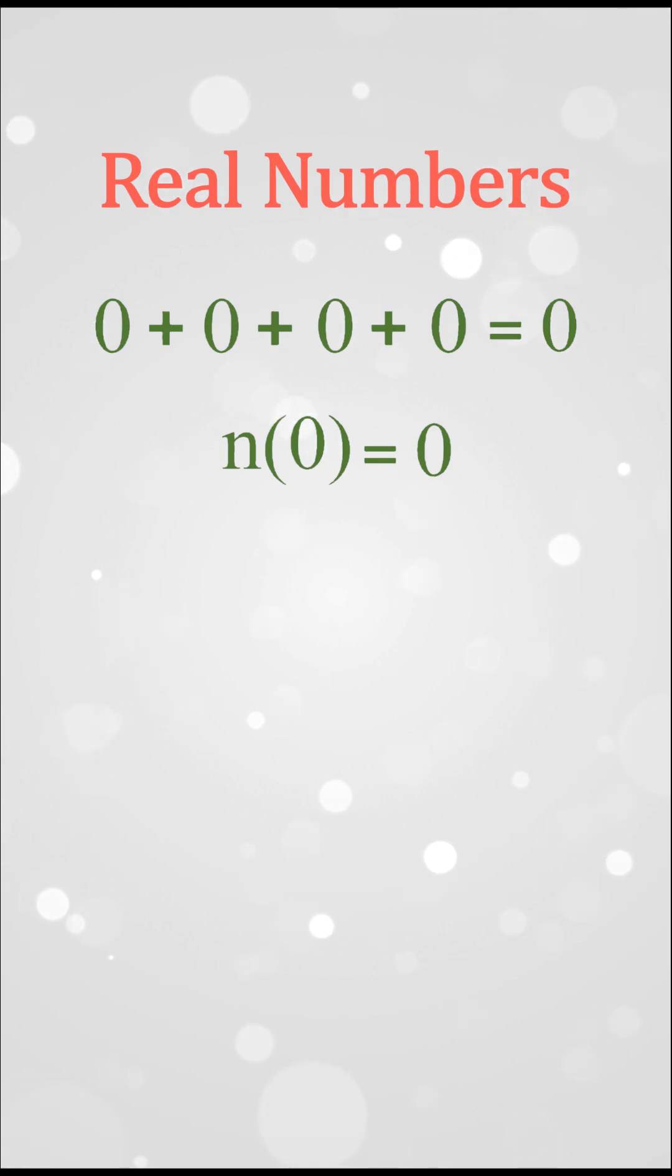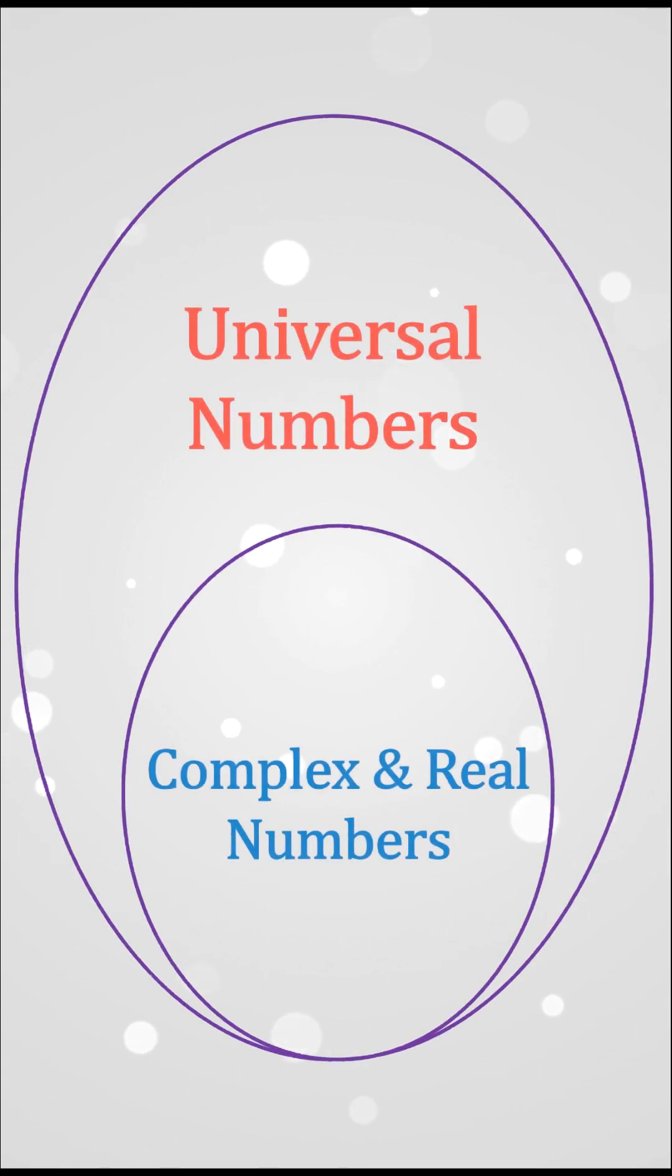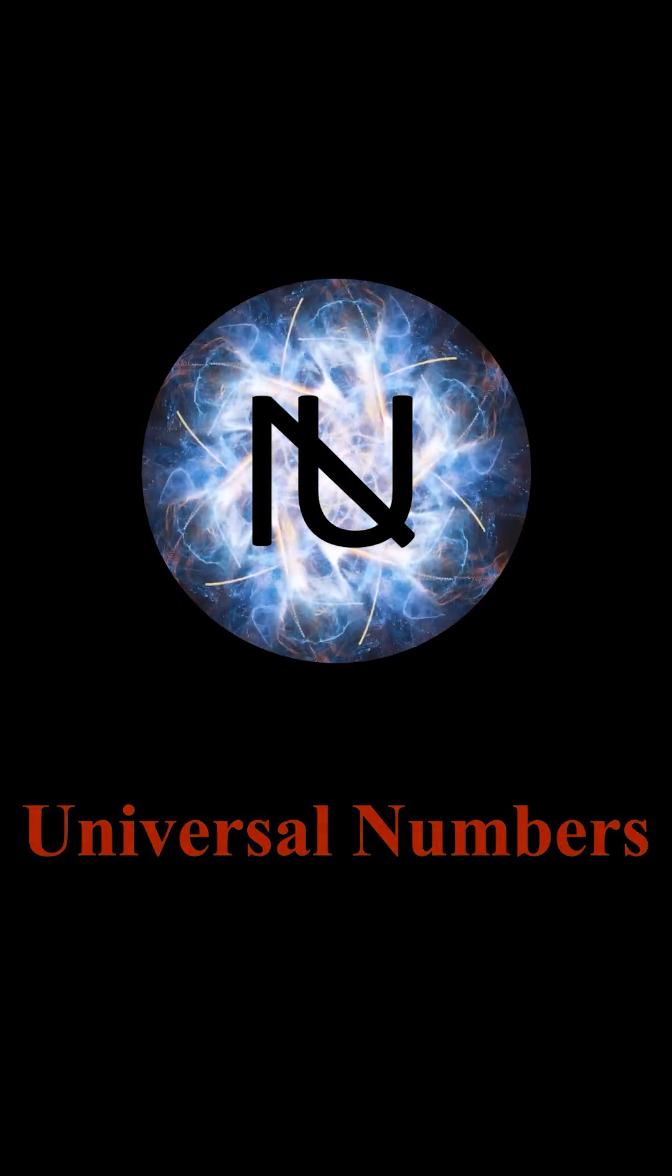And if you still proceed further, these rules will lead you to undefined solutions. So the answer to why indeterminate forms are undefined in real numbers is because the solution lies outside the domain, and that is in the universal number system.